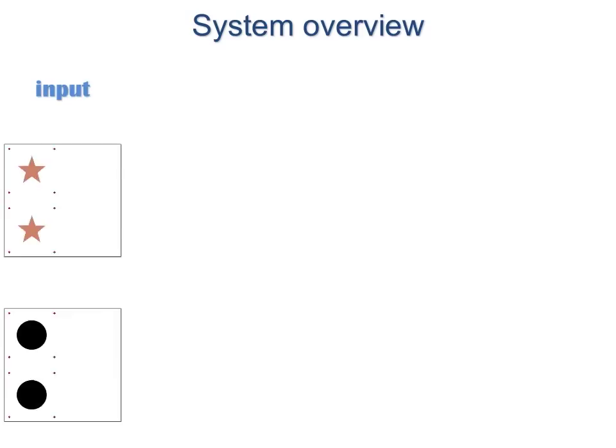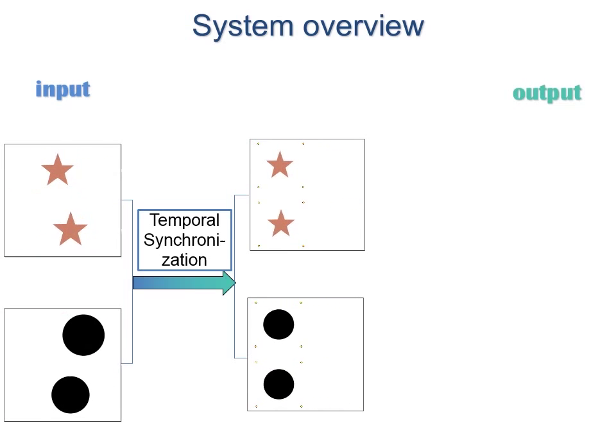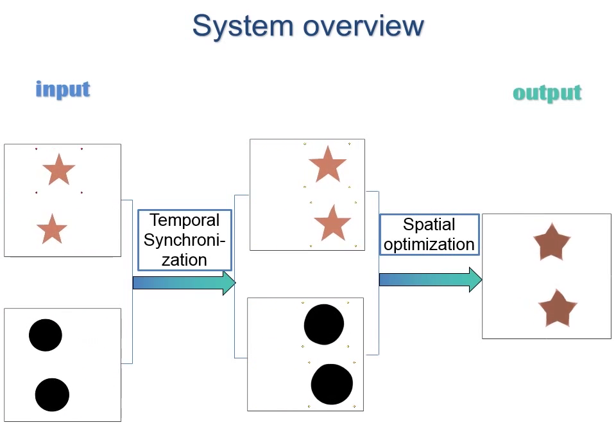Our algorithm consists of two major steps. The first step temporally synchronizes the videos, and the second step performs the spatial alignment of the features in order to produce the final morph sequence.